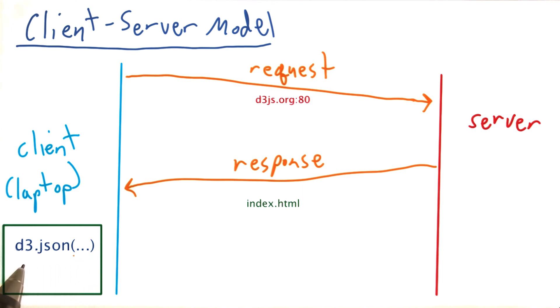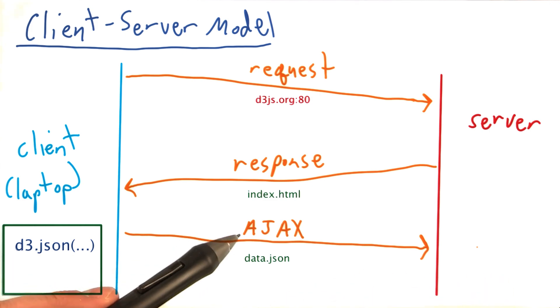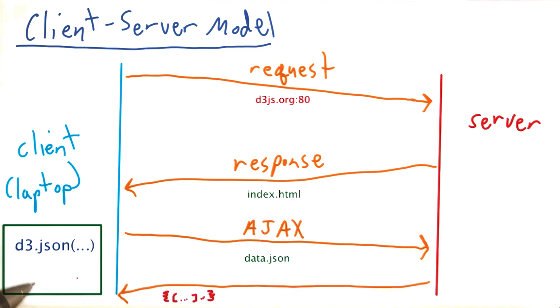It doesn't have to be the server that it came from, but it often is. And what the server sends back, when the web browser makes an AJAX request for some data file, in this case data.json, the server sends back the data in another response.